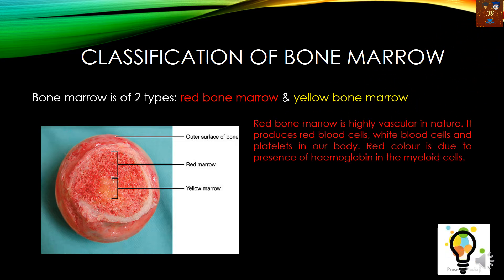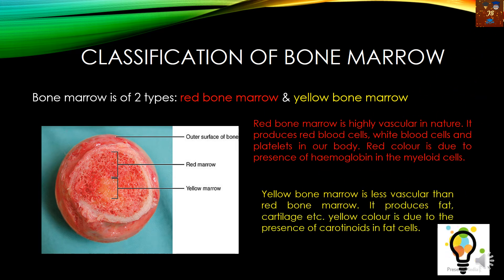If we compare between these two types of bone marrow: the red bone marrow is highly vascular in nature, and the reddish colour is basically due to the presence of hemoglobin within the myeloid cells. The main function of the red bone marrow is to produce different types of blood cells — red blood cells or erythrocytes, white blood cells or leukocytes, and platelets or thrombocytes. Regarding the yellow bone marrow, it basically produces fat and cartilage, and its colour is due to the presence of carotenoids.